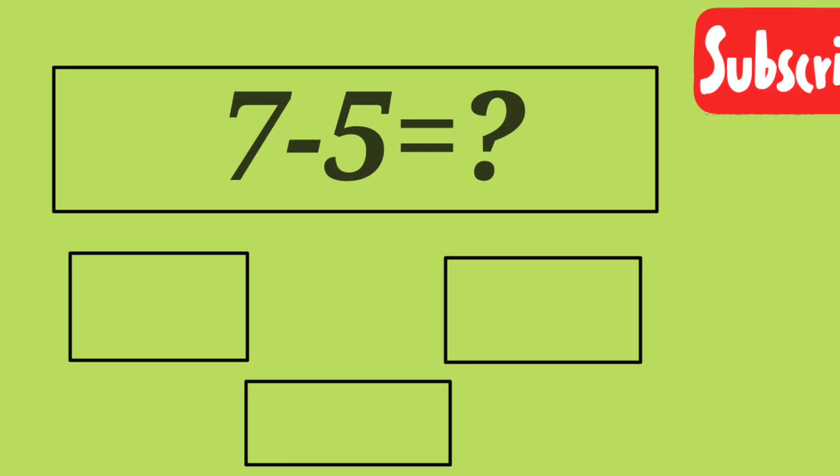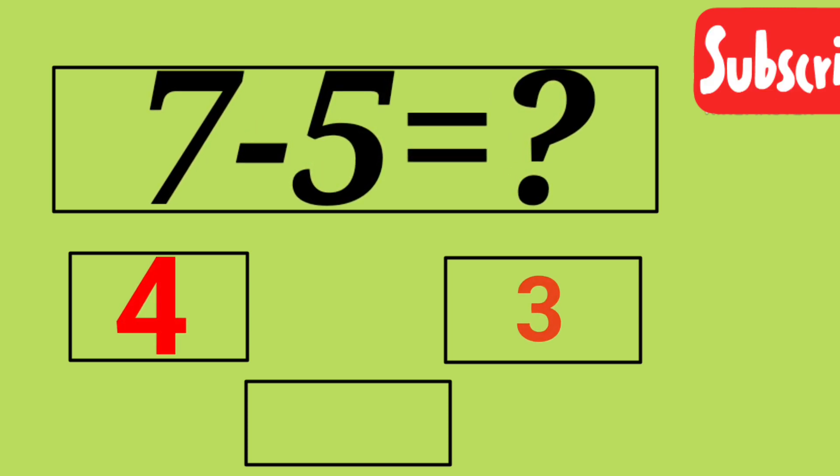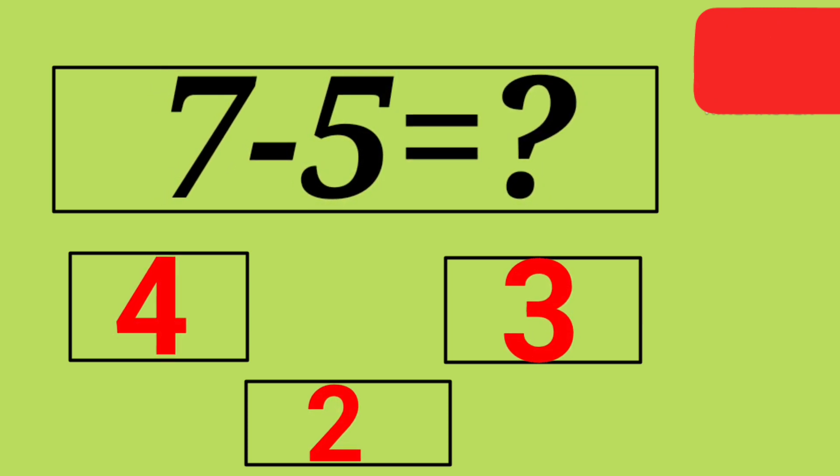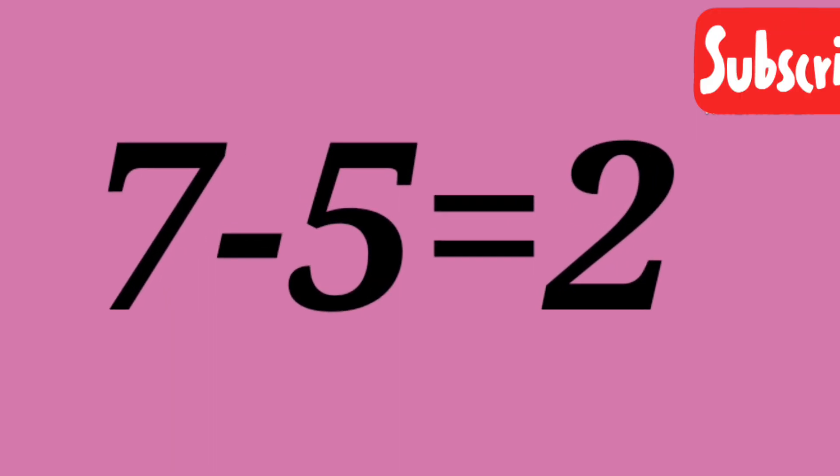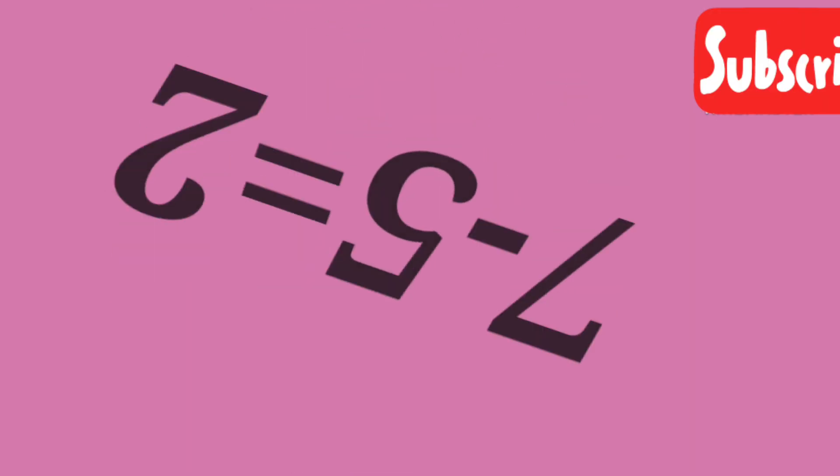7 minus 5 is 4, 3, 2! 2! 7 minus 5 is 2!